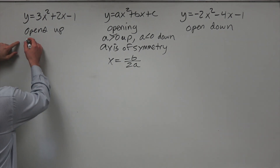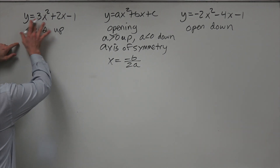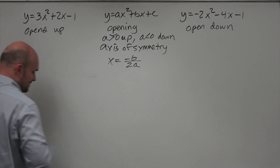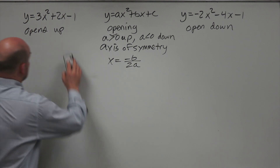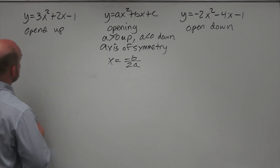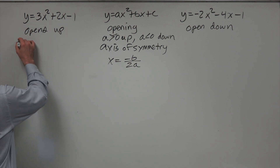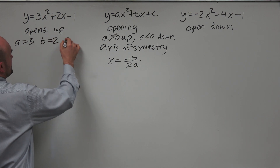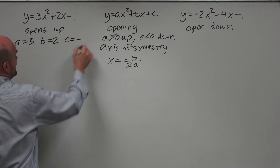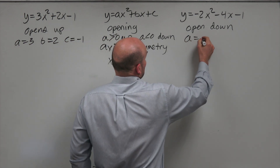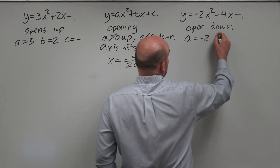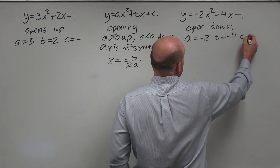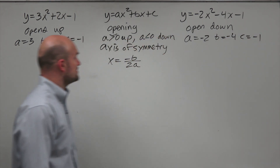All we need to do is identify A, B, and C. For the first equation: A equals 3, B equals 2, and C equals negative 1. For the second equation: A equals negative 2, B equals negative 4, and C equals negative 1.